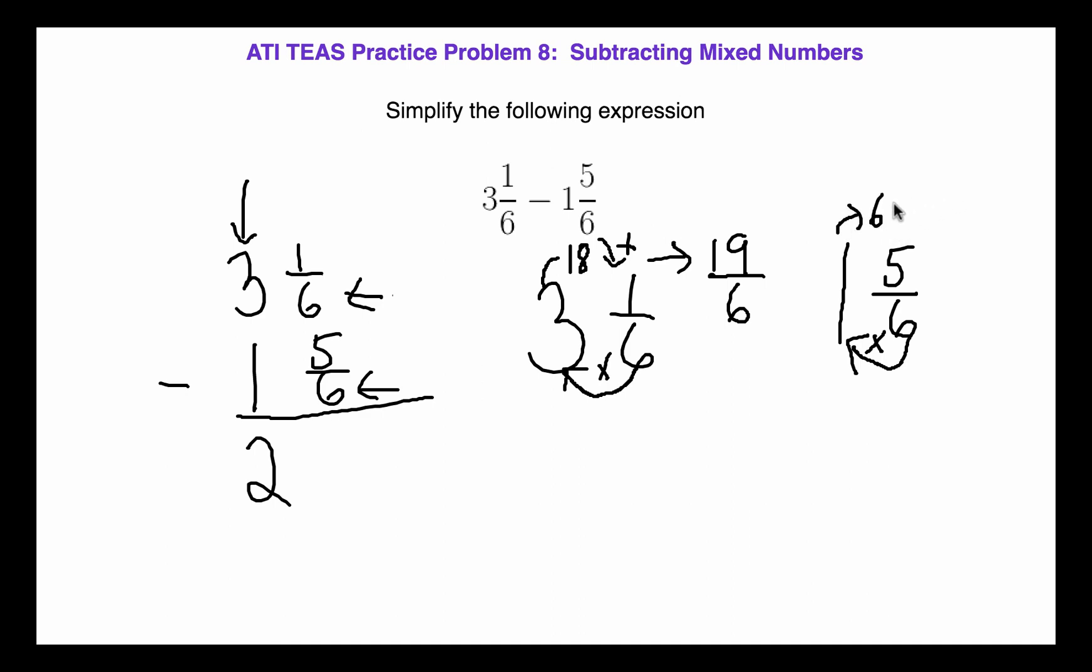Now six plus five gives us 11. And what are we going to do again? We're going to put that 11 over our original denominator, which is six.